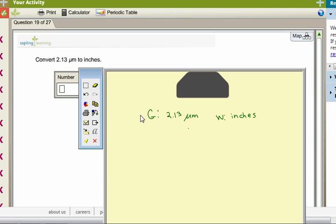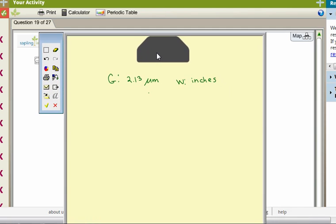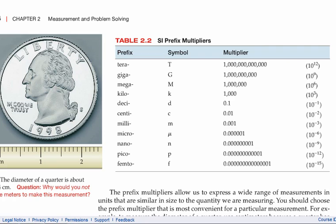After I write down what value is given and what unit we're trying to get to, then I work on figuring out what my conversion factors are going to be. I am going to look at my textbook for some help.